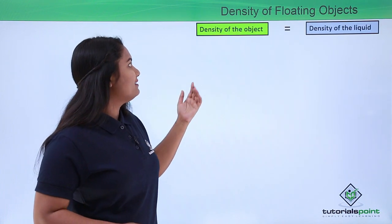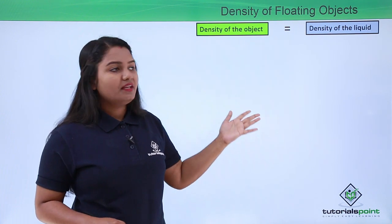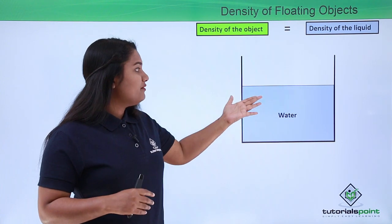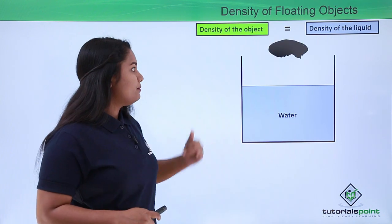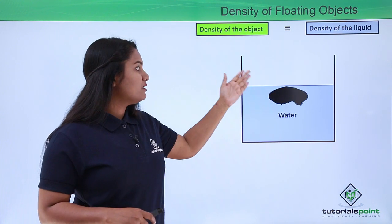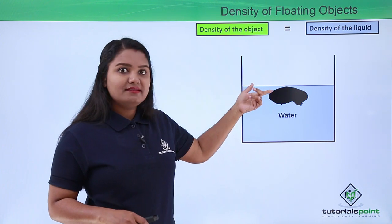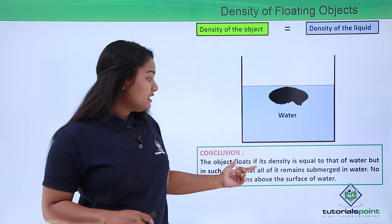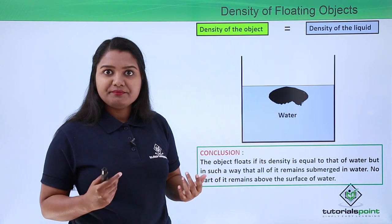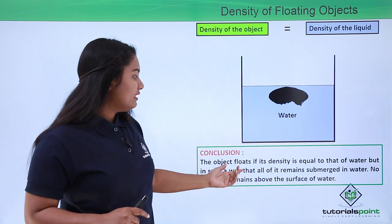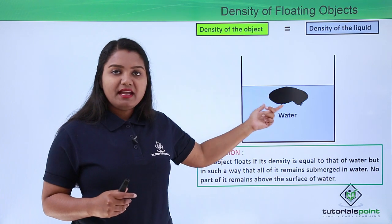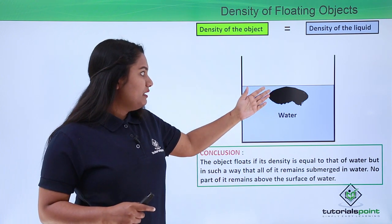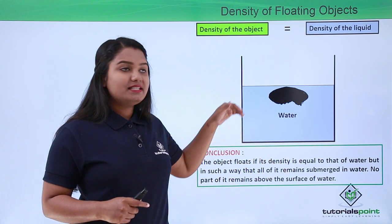In the second case, the density of the object is equal to the density of the fluid. One such substance whose density is very close to that of water is tar. When we place tar on the surface of water, it doesn't float on top — it floats submerged, with all of its mass remaining below the surface and no part exposed to air. However, it does not sink to the bottom of the vessel; it stays afloat throughout the water.